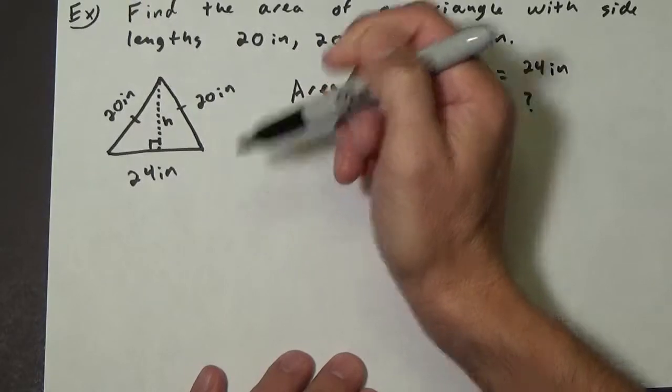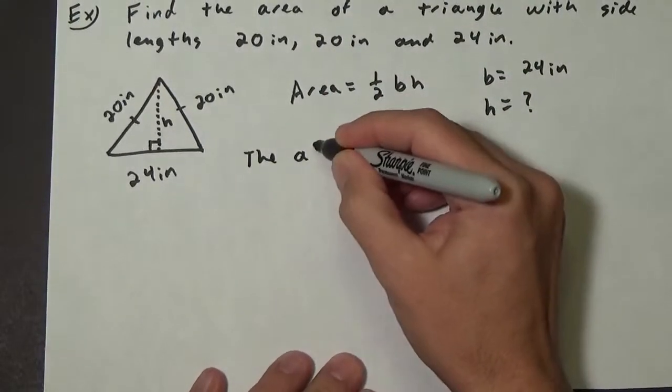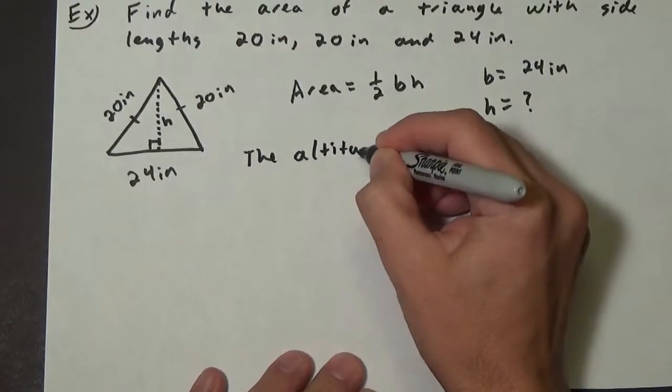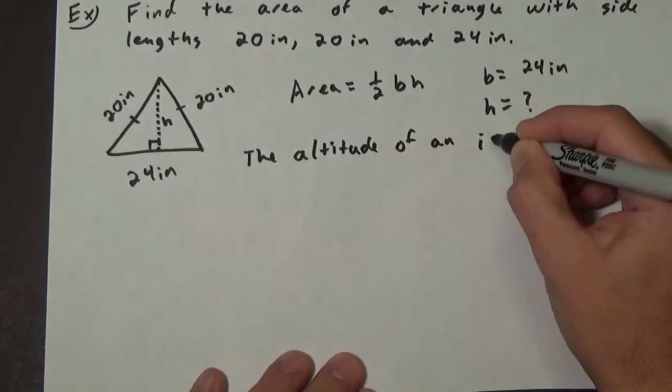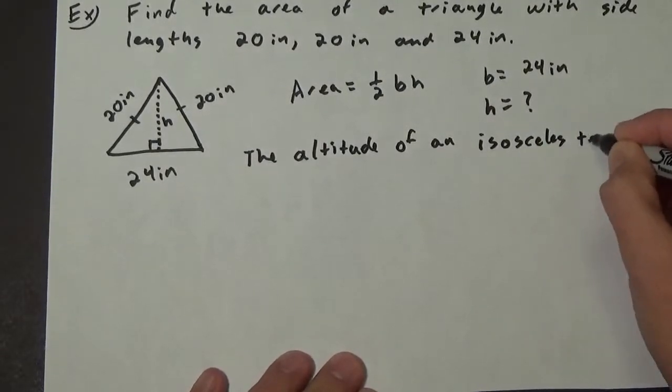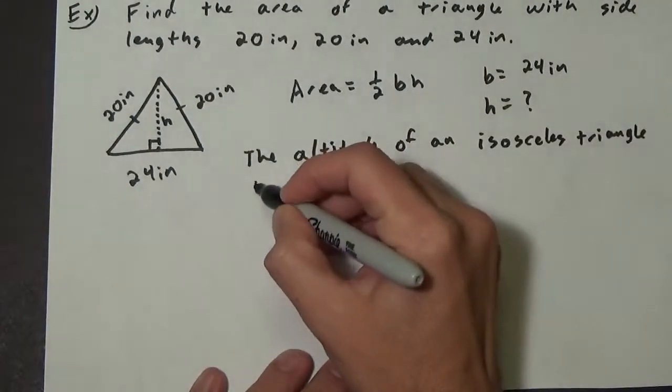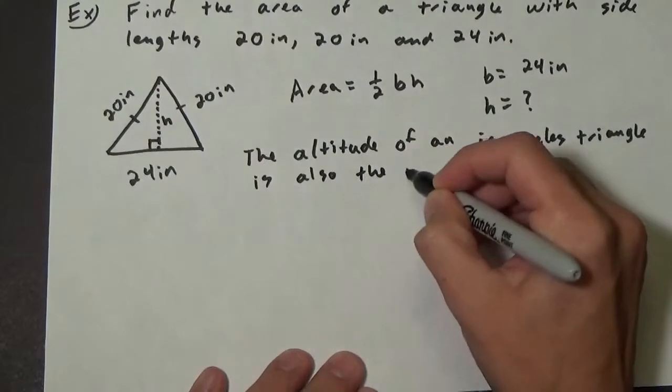of an isosceles triangle is also the median. The median basically takes a triangle's side and turns it into two congruent sides—it's the midpoint.